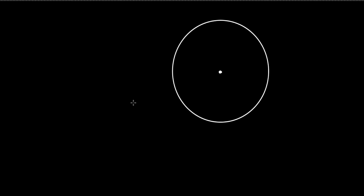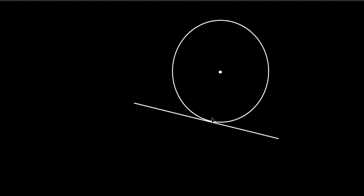Let's draw this thing first and then we'll read it. We've talked about what kind of line that is. That line right there just touches the circle at one point. Do you remember what that name is? It's a tangent. It's tangent to the circle, so it hits the circle at exactly one point.